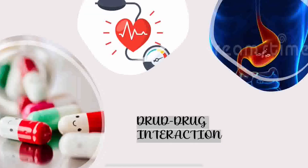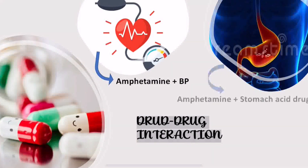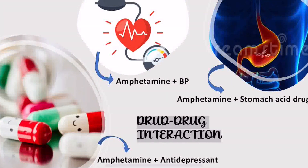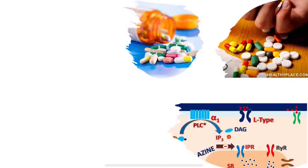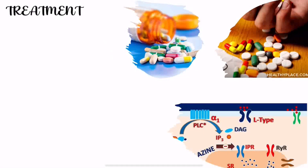Drug-drug interactions: Amphetamine with antidepressants increases the risk of irregular heartbeat. Amphetamine with blood pressure drugs acts sympathetically, resulting in hypertension. Drugs that decrease stomach acid, such as antacids, can increase the level of Amphetamine in the body.